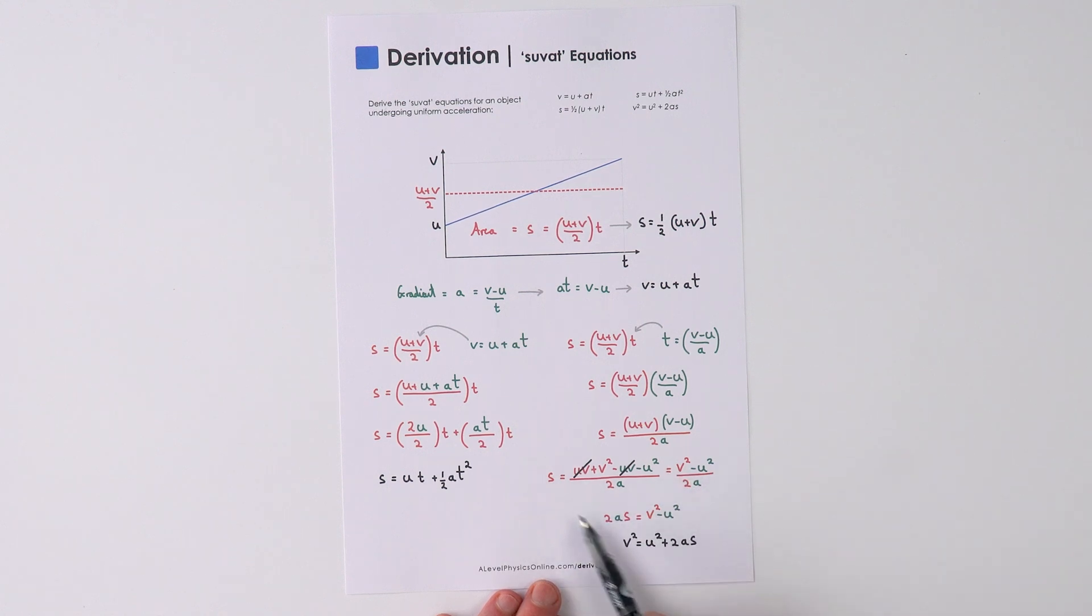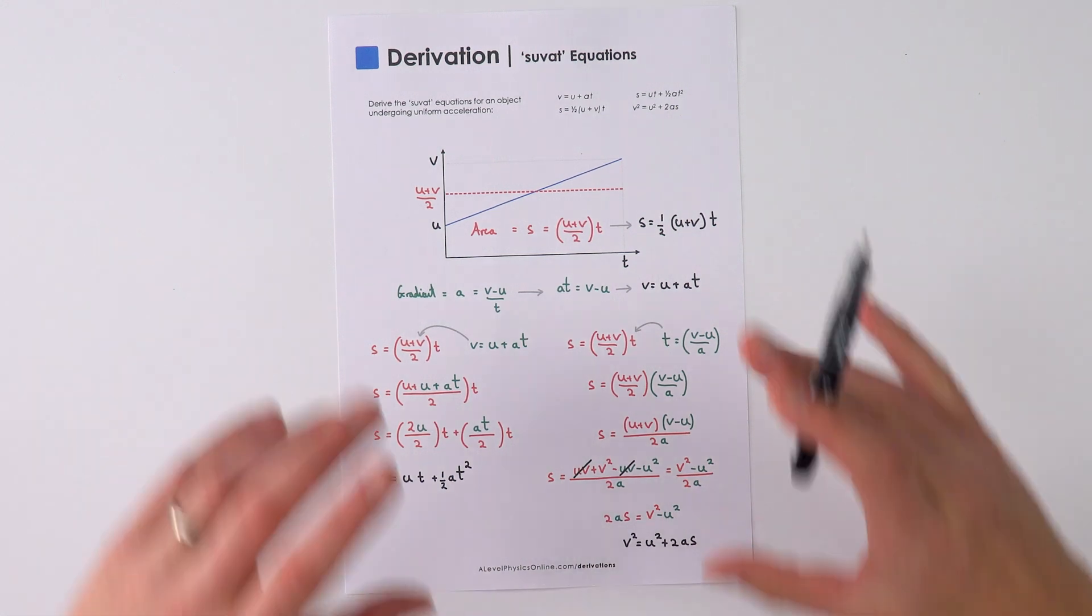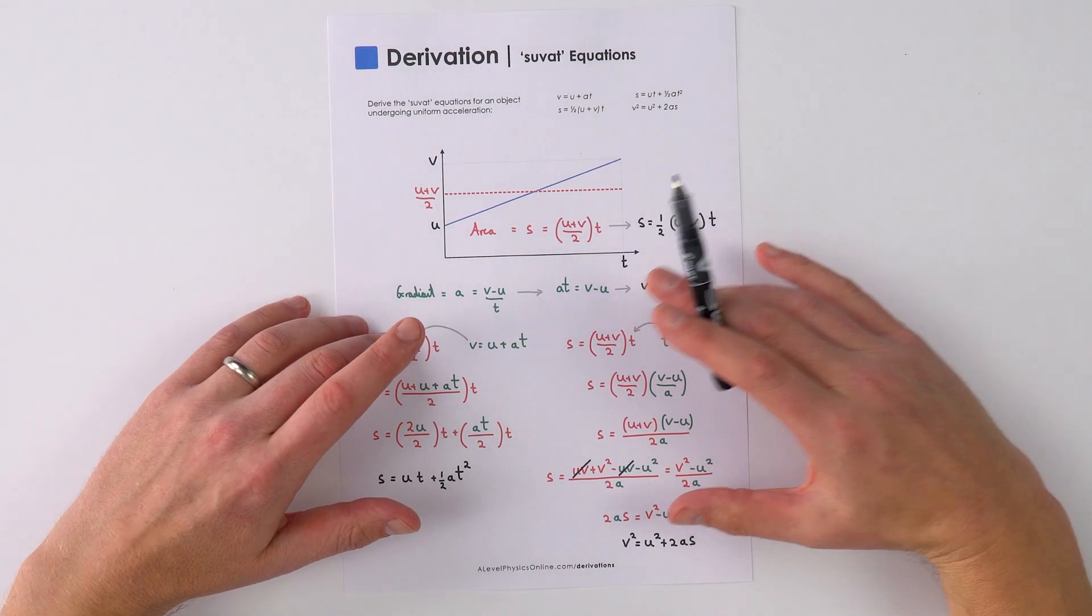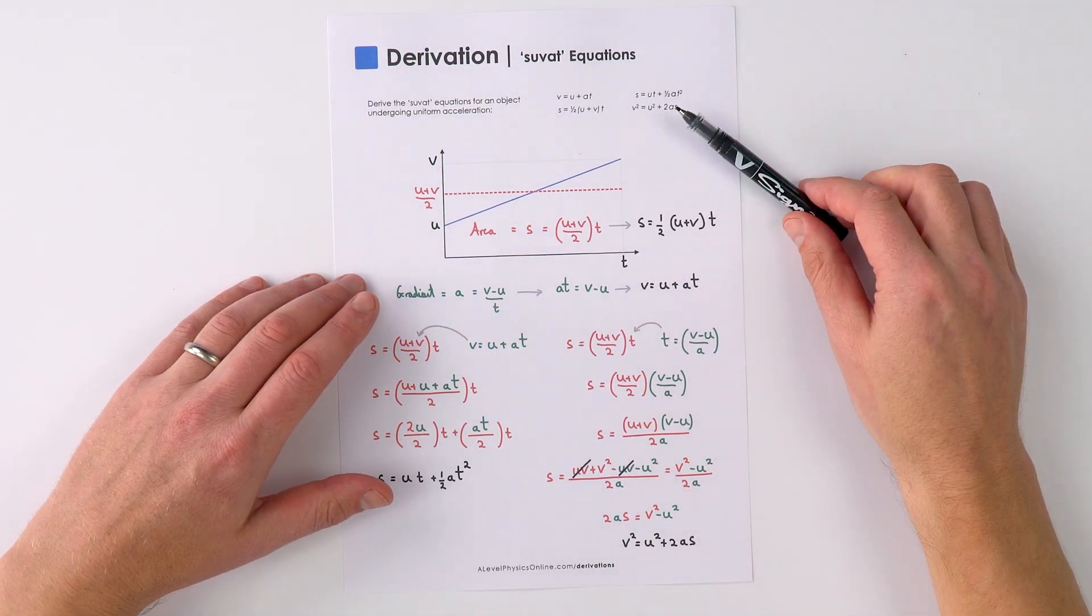We can bring the two a up over here and then we can rearrange to make v squared the subject to say that v squared is equal to u squared plus two as. So this is just one way that you can derive those Suvatt equations fairly quickly.